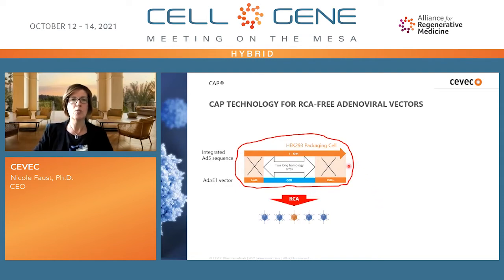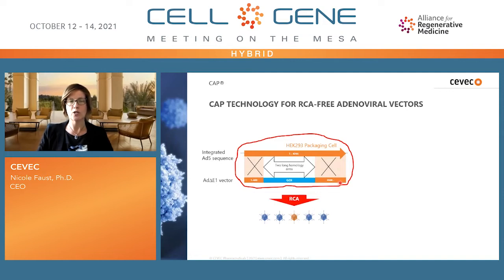This means that in the HEK293 genome, there is a long stretch of adenovirus DNA leading to two homology arms flanking the gene of interest in the E1-deleted adenovirus vector. This can lead to double crossovers and, associated with that, homologous recombination, which then replaces the deleted E1 gene in the vector leading to RCA — replication-competent adenovirus.